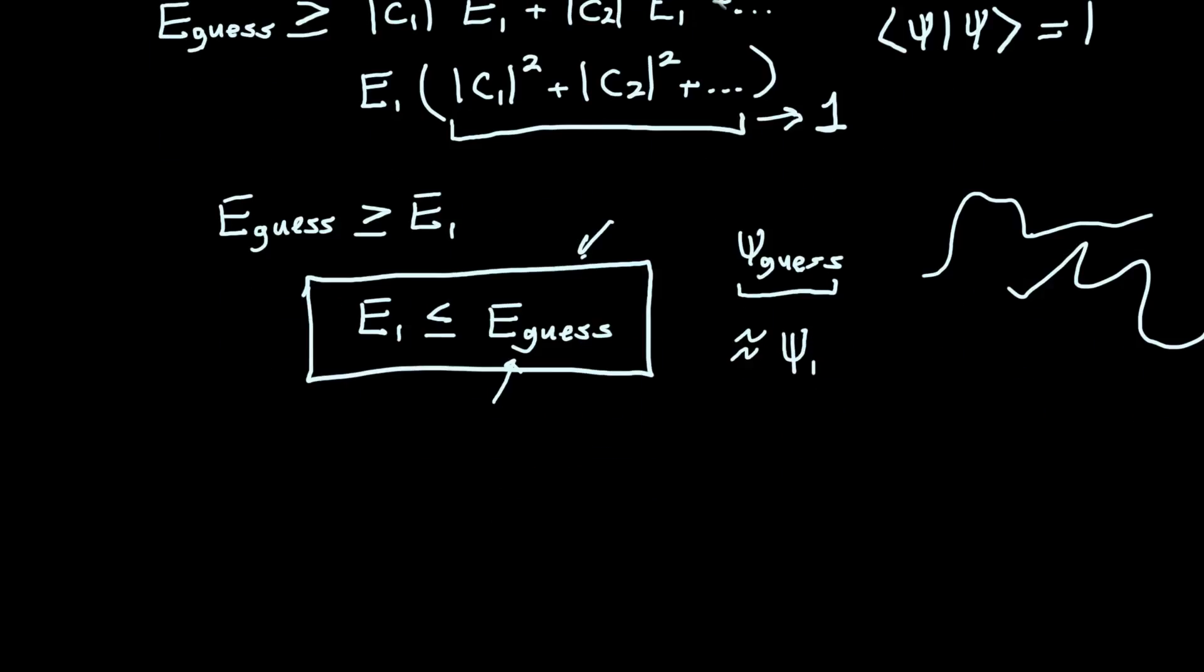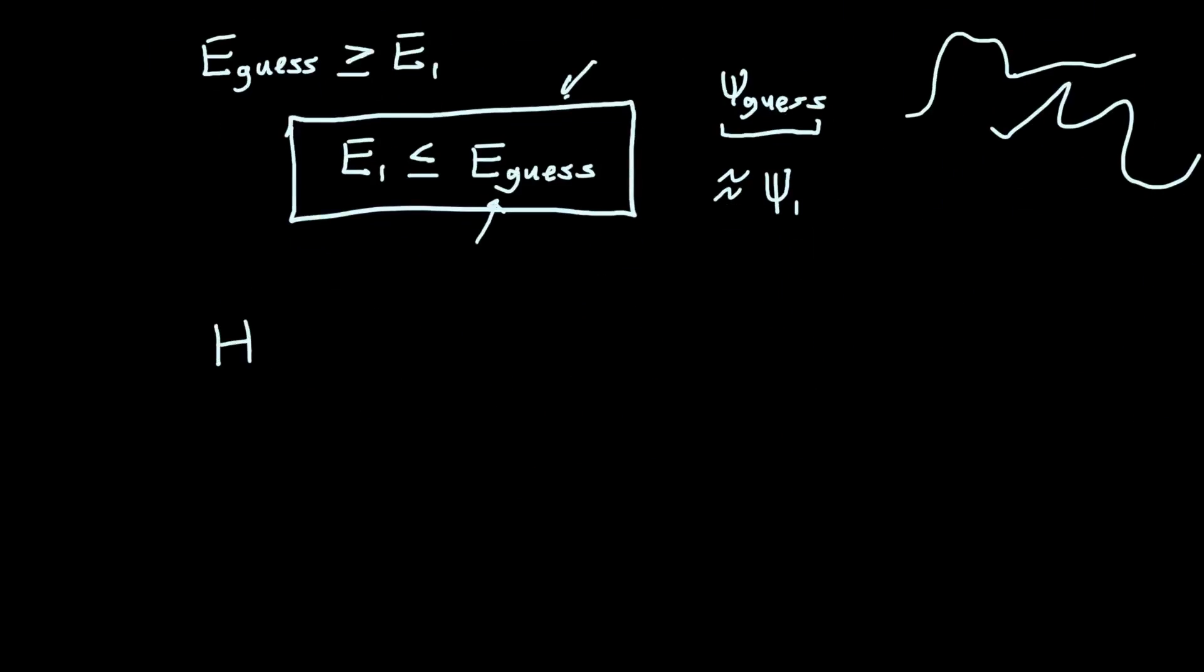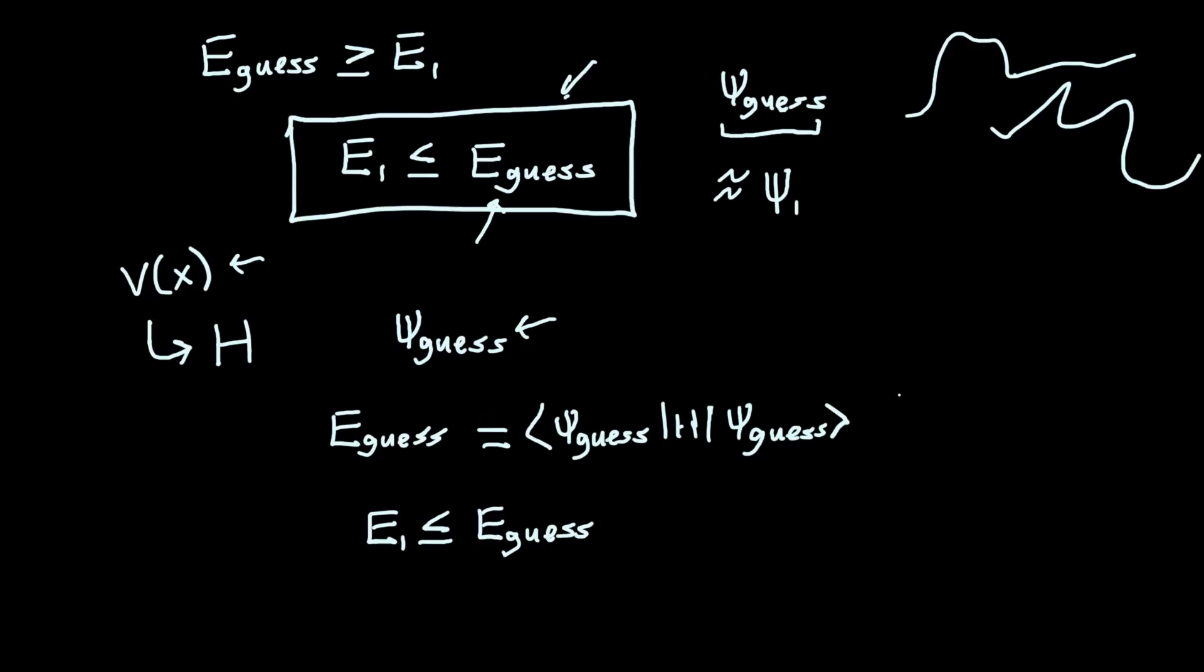So the process of using the variational principle looks something like this. You have a known Hamiltonian—I'm just going to hand you a potential V(x). So you have a known Hamiltonian, and you take a guess as to what you think the wave function will be. And then you compute the energy for this wave function, which is ⟨ψ_guess|H|ψ_guess⟩. And your ground state energy E1 is going to be always less than or equal to, bounded from above by, this guess energy. And so that's sort of the process.